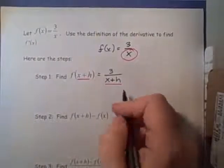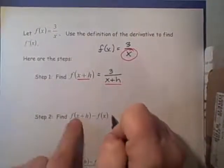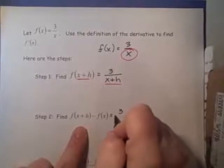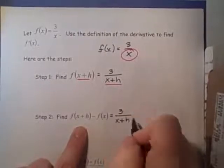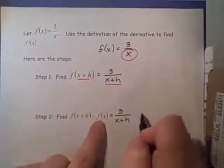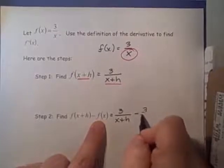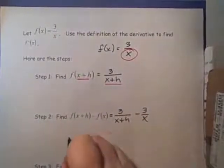Let's move on to step two. In step two, we're going to take our answer from step one, 3 over x plus h, and subtract off f of x. So f of x is just 3 over x, and we want to simplify here.